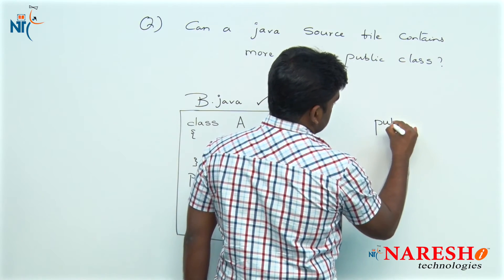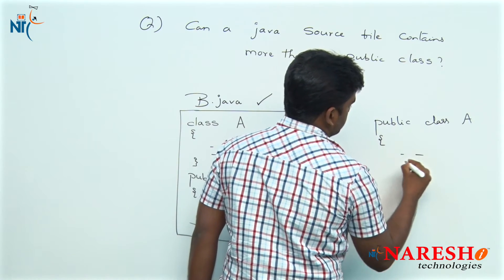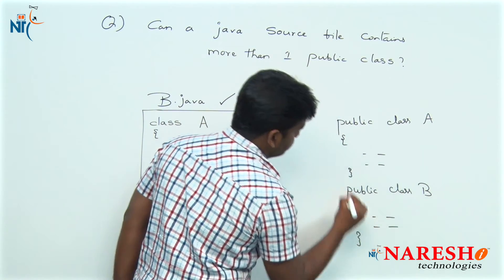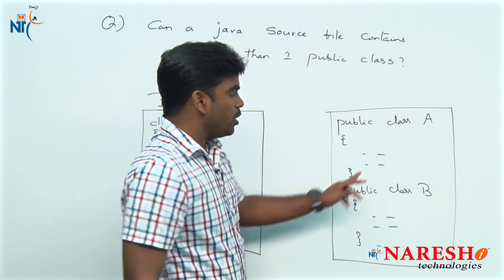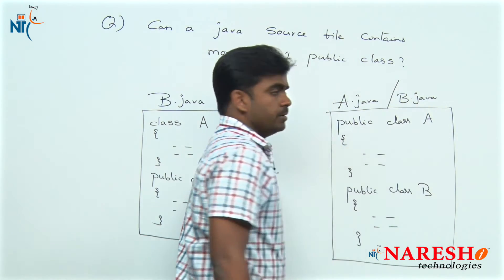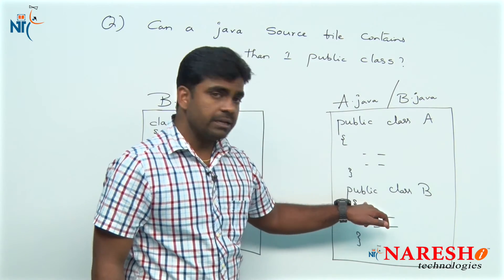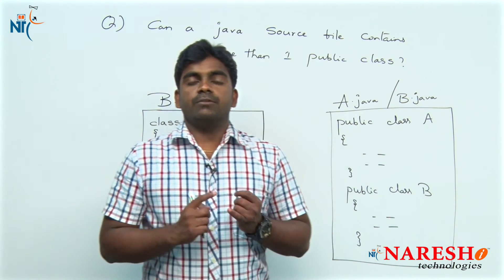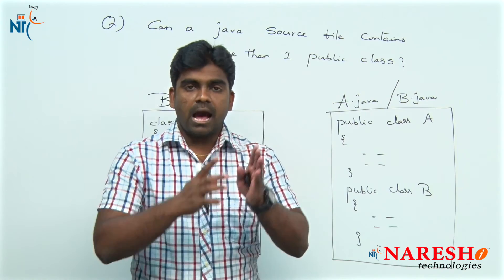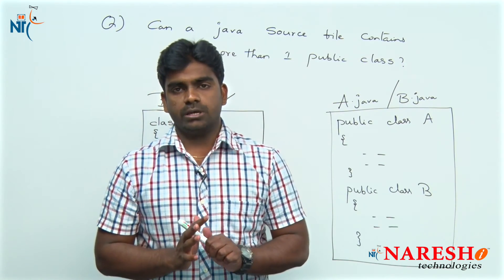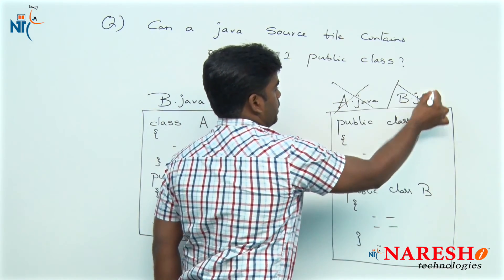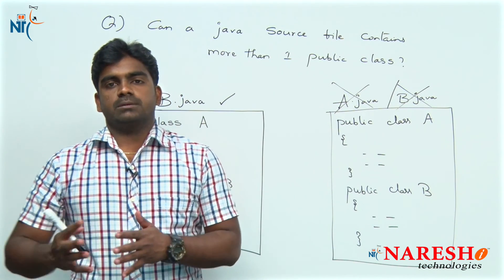But suppose you write two public classes — public class A and public class B. Then what name do we give — a.java or b.java? You cannot give either a.java or b.java. If you give a.java, what about B? If you give b.java, what about A? That is why we cannot define more than one public class in a single Java source file. If there are a hundred public classes, a hundred source files should be present. So the answer is: not allowed. Thank you — for more videos please subscribe to the Naresh IT channel.